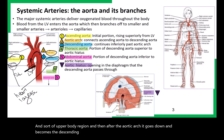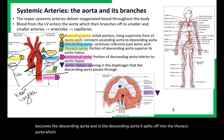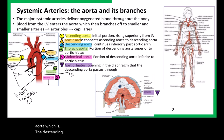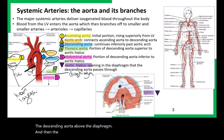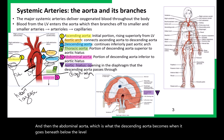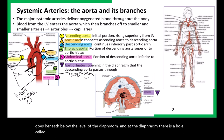The aorta continues upward as the ascending aorta, then does a U-turn in the aortic arch. The branches here supply the neck, head, and upper body region. After the aortic arch, it goes down and becomes the descending aorta, which splits into the thoracic aorta above the diaphragm and the abdominal aorta below the diaphragm. There is a hole called the aortic hiatus that the descending aorta passes through.